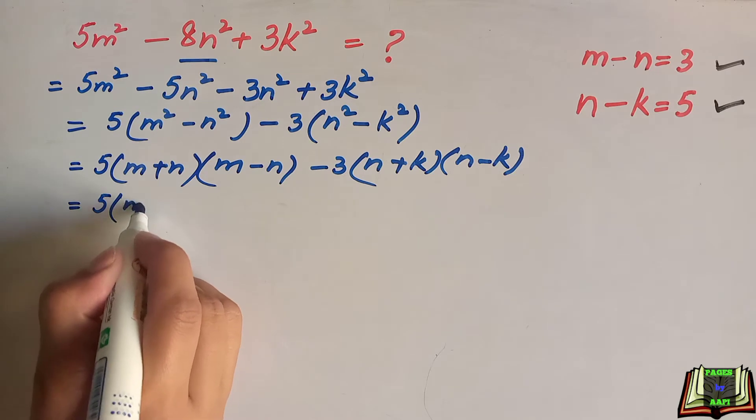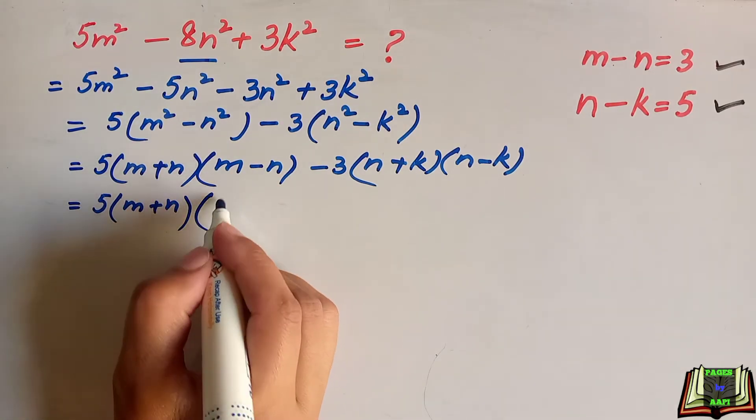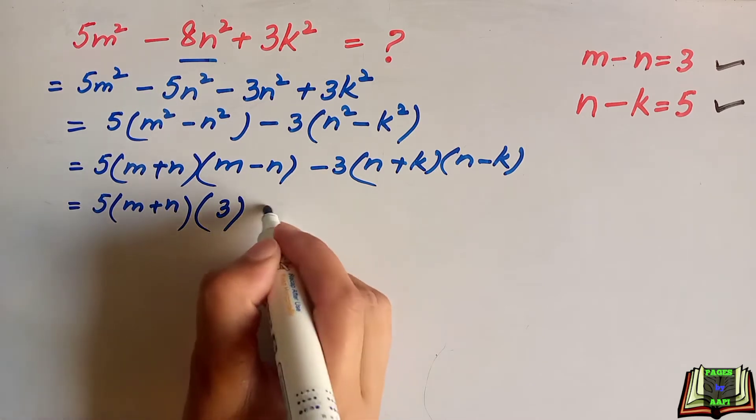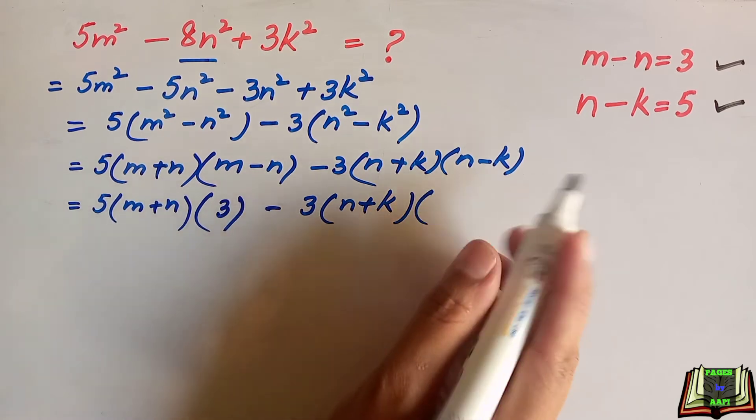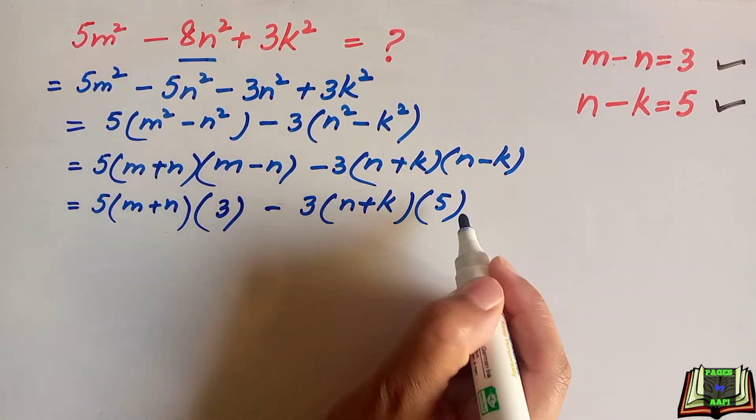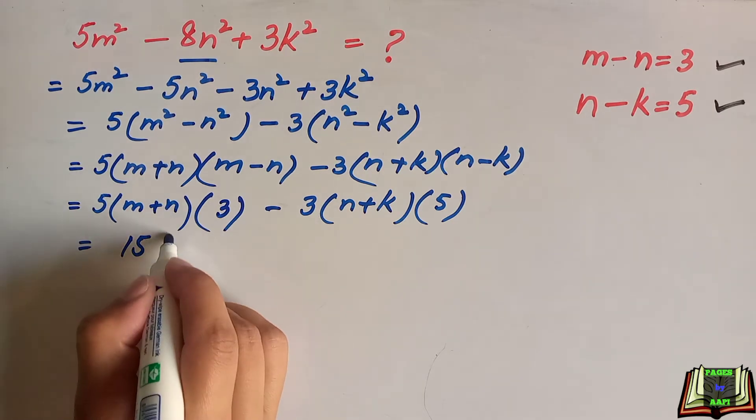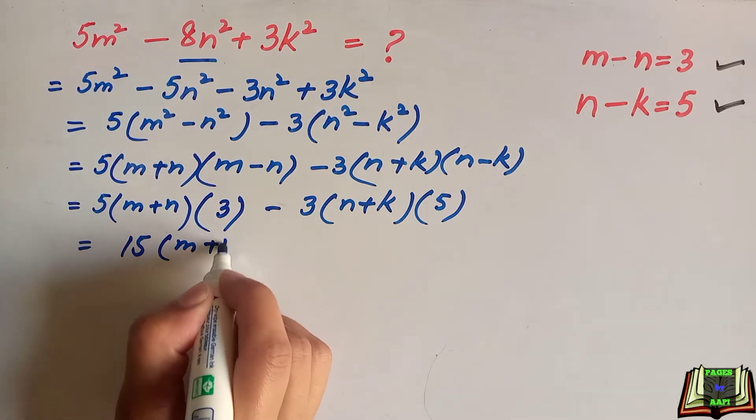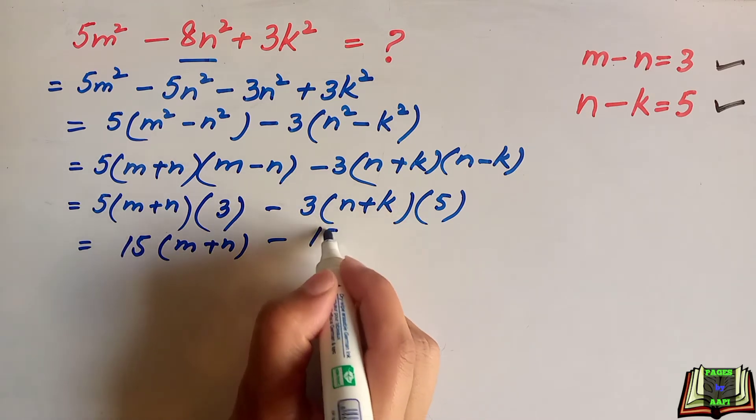5(m + n) as it is, and m - n is equal to 3. Minus 3(n + k) as it is, and n - k is equal to 5. Now 5 times 3 is 15(m + n), minus 3 times 5 is 15(n + k).